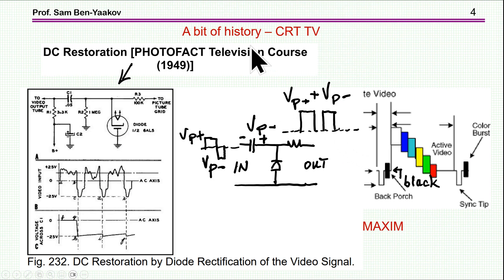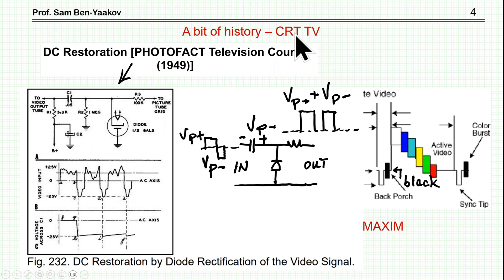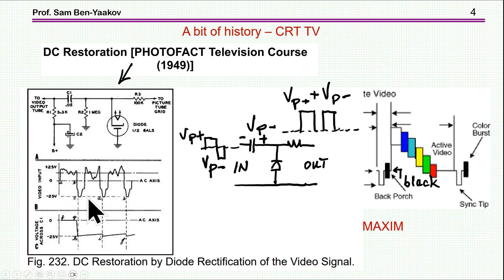Now let me say something about the history of these circuits. It actually goes back to the television era — analog television. I'm showing here part of the DC restorer of a video signal for a CRT cathode ray tube. These displays had horizontal lines one after the other, with a video signal representing intensity and synchronizing pulses. Since it is AC, the whole thing is shifted, and you have to clamp it to the negative side in order to get the amplitude of the video at the right value, then shift it back.